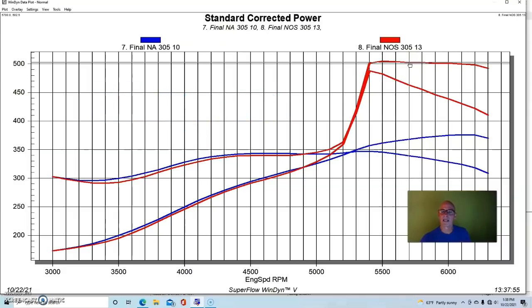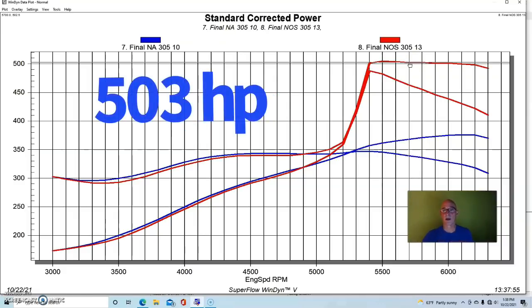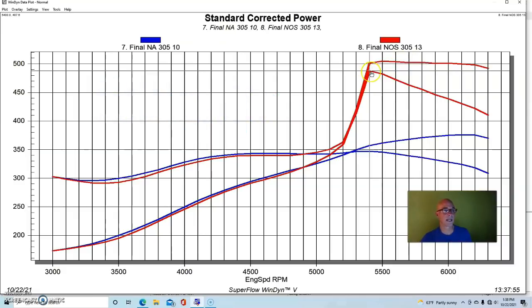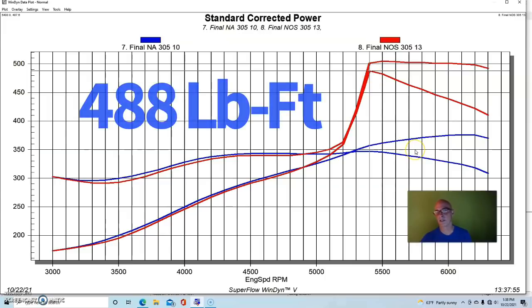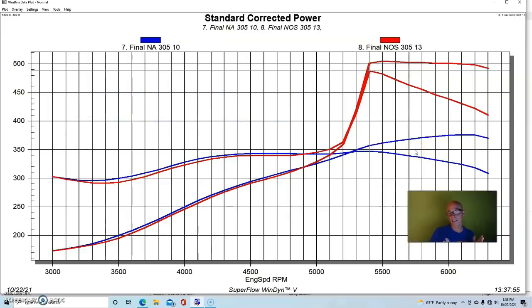And we ran this on pump gas. This motor produced over 500 horsepower, 503 horsepower. Peak torque checked in at 488 foot-pounds. Obviously you could activate this a lot earlier, and if you got the same horsepower gain down low, you'd have a lot more torque and you'd be able to accelerate.